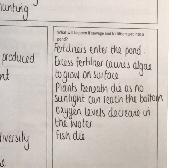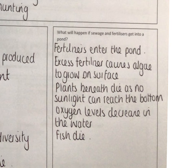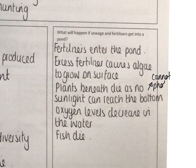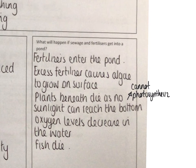What will happen if sewage and fertilizers get into a pond? The fertilizers will enter the pond through excess rain after a farmer has spread them. The excess fertilizer causes algae to grow on the surface. The plants at the bottom of the pond or lake die because no sunlight can reach the bottom, so they cannot photosynthesize. As there's no photosynthesis taking place, oxygen levels decrease in the water, and as oxygen levels decrease, the fish in the water die.